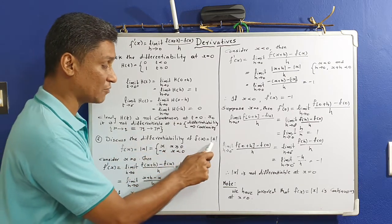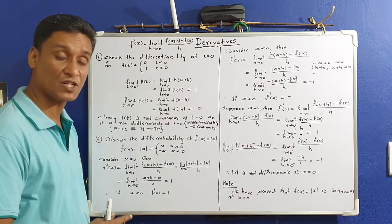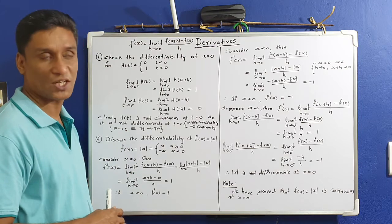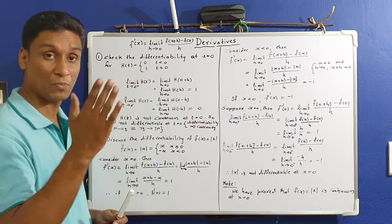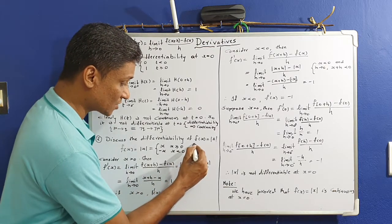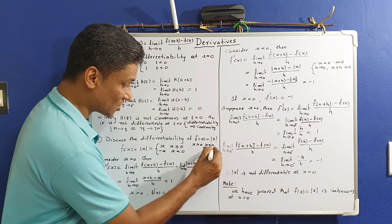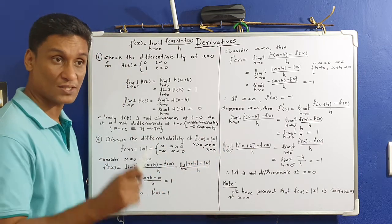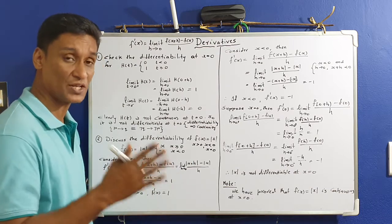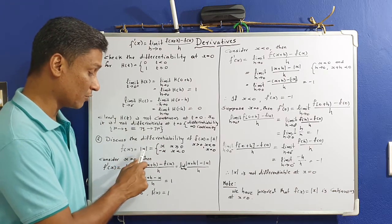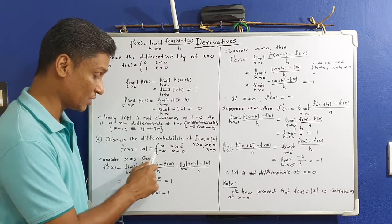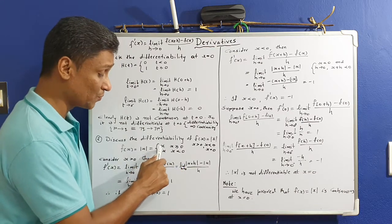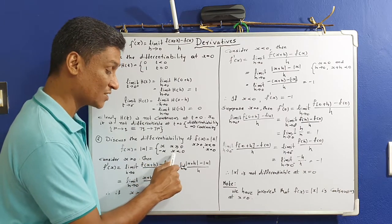Now discuss the differentiability of f(x) = |x|, the absolute value function. We check differentiability on the whole real number line, considering three cases: x > 0, x < 0, and x = 0. The definition: |x| = x if x ≥ 0, and |x| = -x if x < 0.